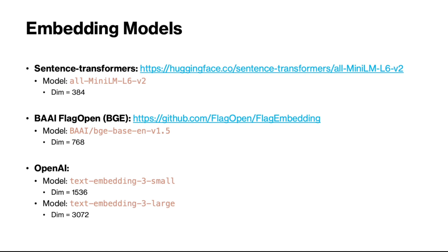Another important component of a RAG system is the embedding model. The embedding model will generate high-dimensional vectors that capture semantic meanings of their input text. Some popular choices are sentence transformer,